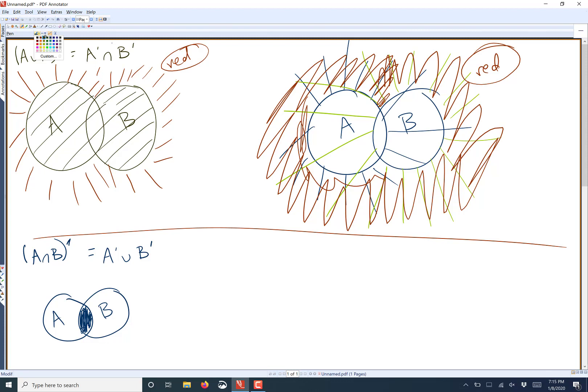Now we want the complement of that. So the complement of that will actually be everything outside of that. So that actually includes most of A and most of B and everything outside of those.